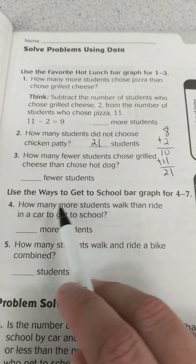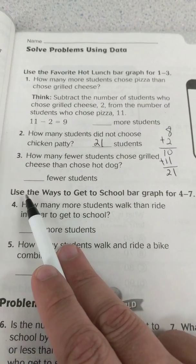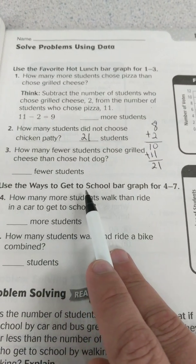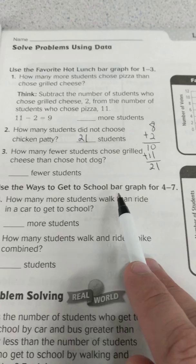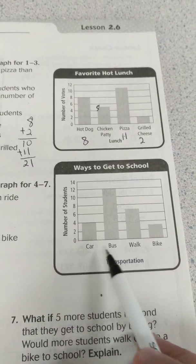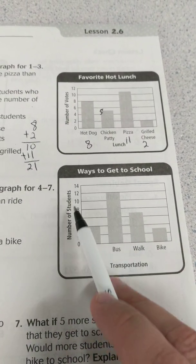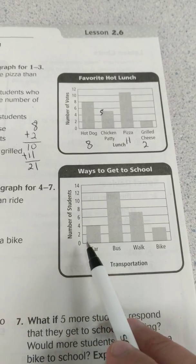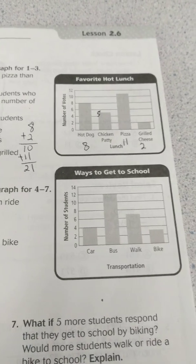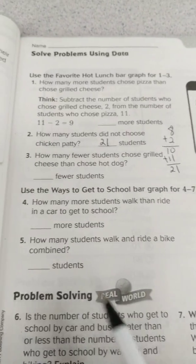Let's look at the directions: use the ways to get to school bar graph for problems four through seven. This is the ways to get to school graph, showing the number of students who chose different types of transportation.